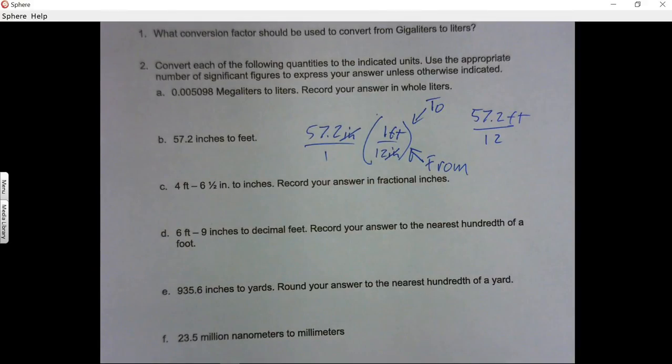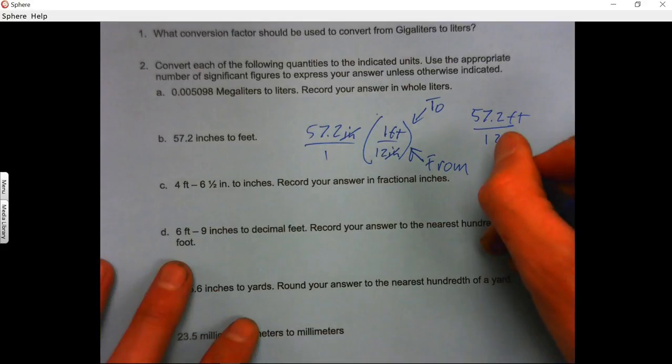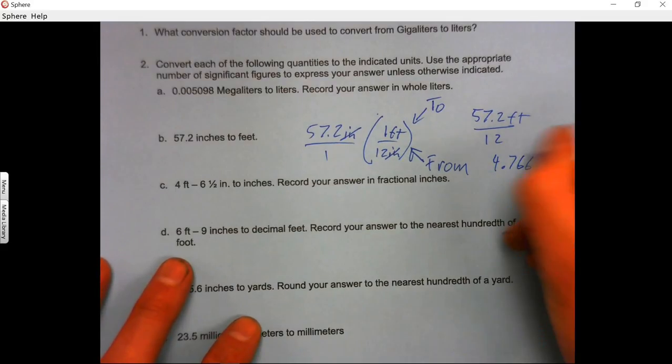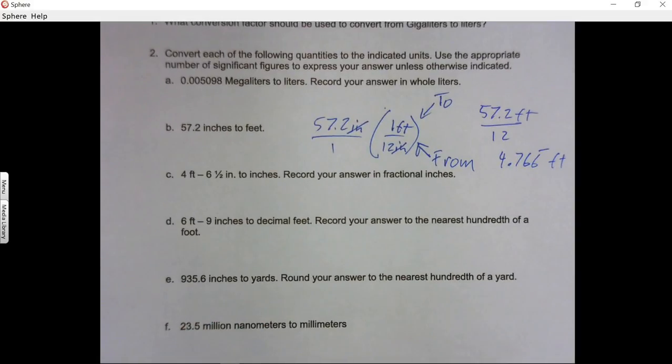And then you have 57.2 divided by 12, and that will give you 4.766 repeating feet. Okay, so there's your first example.